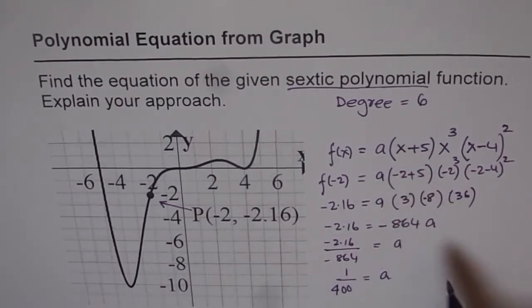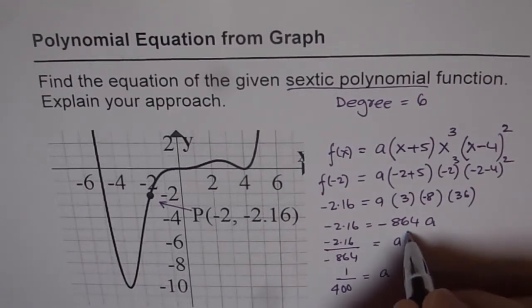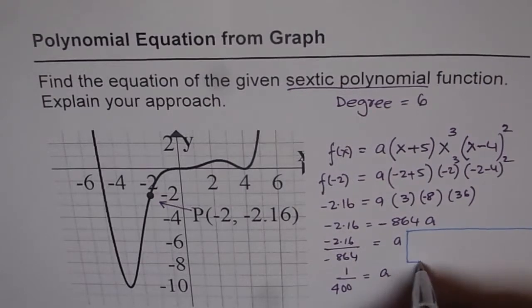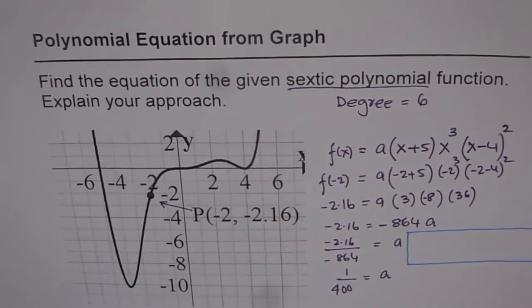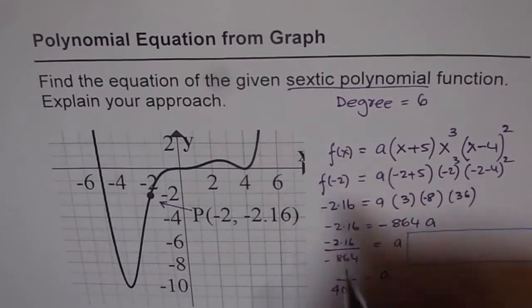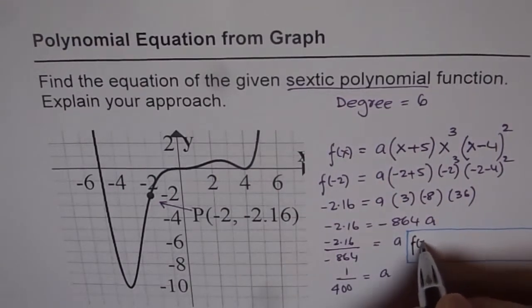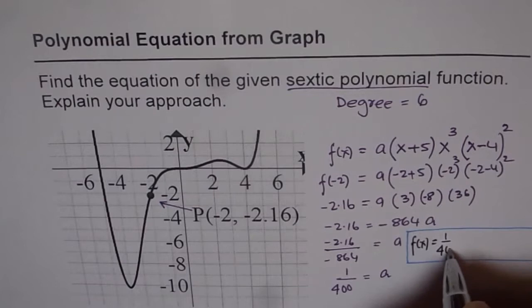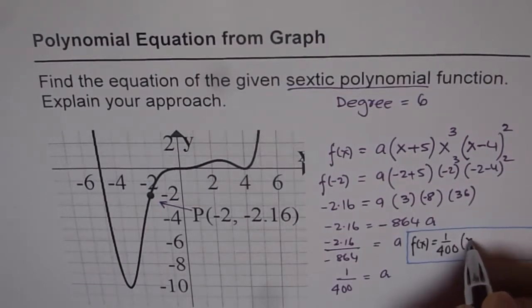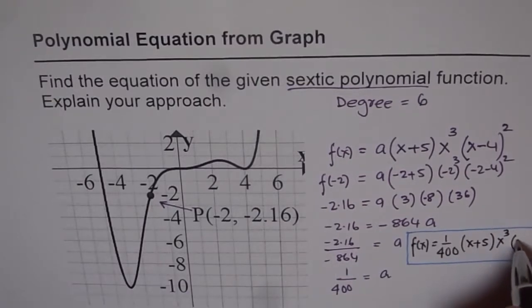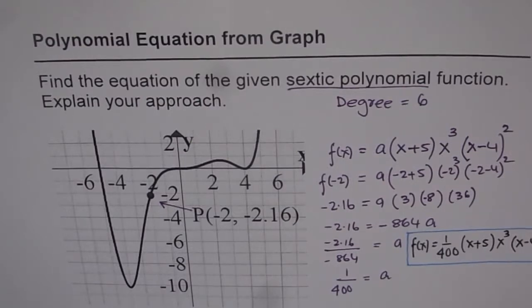Since we know a we can now write down the equation of our function right. So the equation of the function is let me write down here itself in this block. So the equation of the function is we just substitute the value of a in f of x. It is f of x equals to 1 over 400 x plus 5 times x cube times x minus 4 whole square right. So that is the equation of the function.